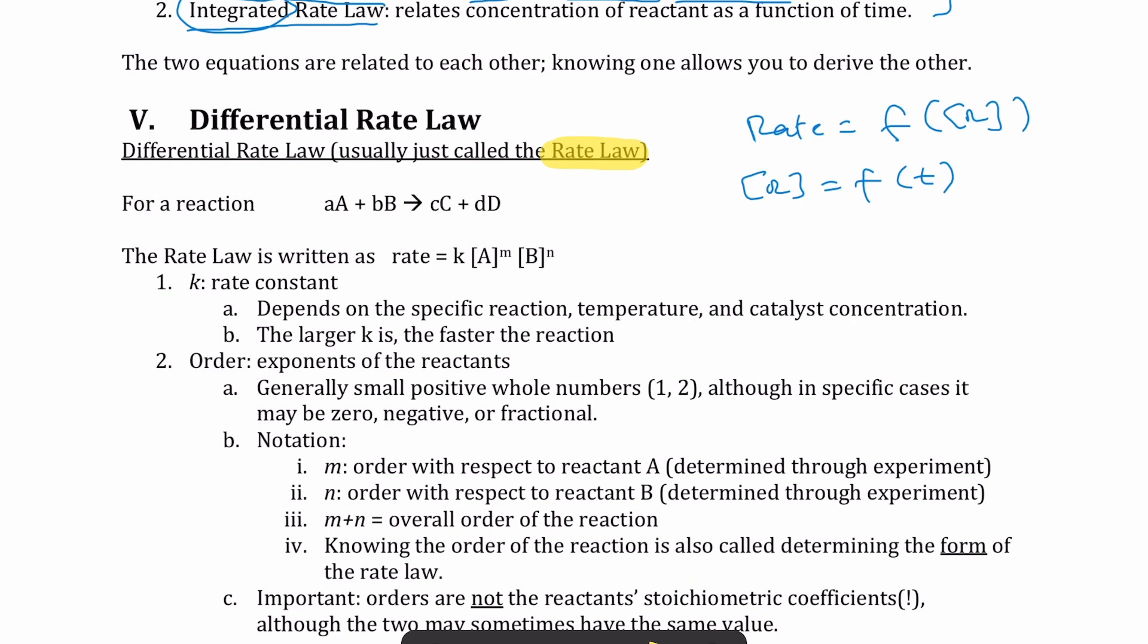So if the question wants you to determine the integrated rate law, it will specifically say that. So we're going to start with our favorite reaction here, which is aA + bB goes to cC + dD, where the uppercase letters represent the actual species, and then the lowercase letters represent the coefficients. Whenever you're given a reaction that looks like this, if you want to write the differential rate law, all you have to do is write it in this form right here, which is rate is equal to K times the concentration of the first reactant, A, raised to some power. We put the letter M there to denote that power. We'll discuss what this means in a sec. And then the second reactant, which is B, concentration of that raised to the power of N.